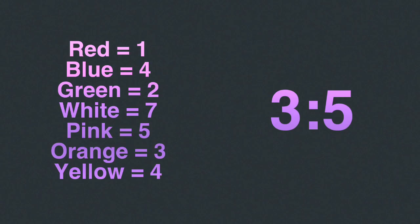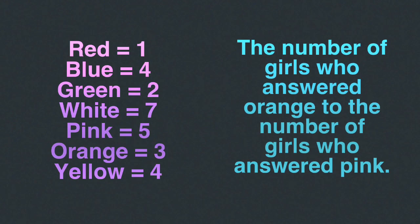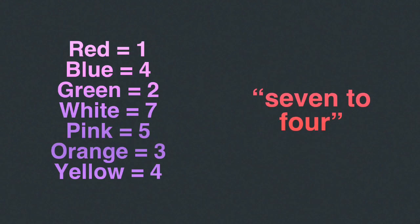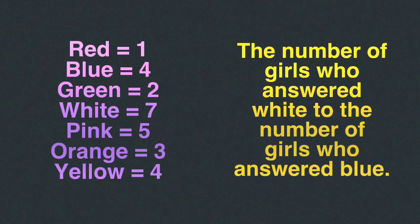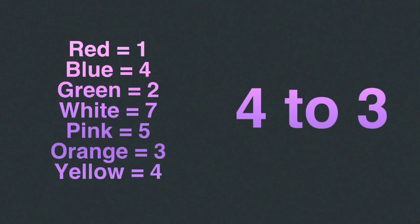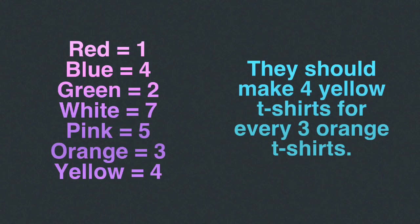Using the ratio three to five, can you come up with a ratio relationship from this data? How about the number of girls who answered orange to the number of girls who answered pink? Can you come up with a ratio relationship for the ratio seven to four? You could say the number of girls who answered white to the number of girls who answered blue has a ratio of seven to four. What about the ratio four to three? One possible ratio relationship: they should make four yellow t-shirts for every three orange t-shirts.